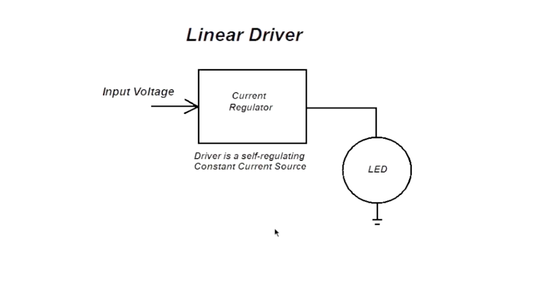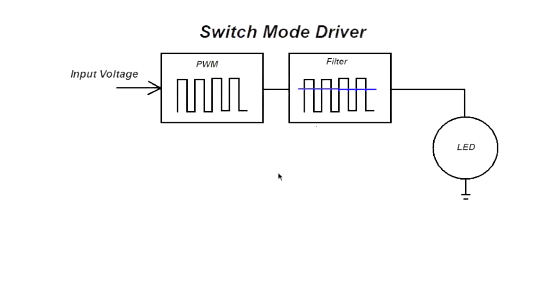With a linear driver, we have simply a current regulator. We ensure the LED only receives the amount of current that it requires for full brightness. With a switch mode driver, things get a little more complicated.